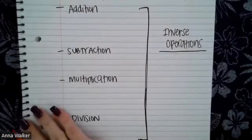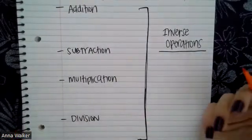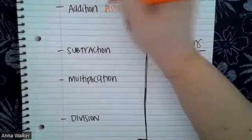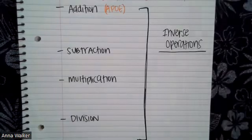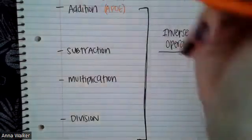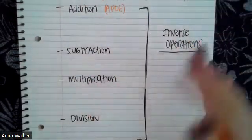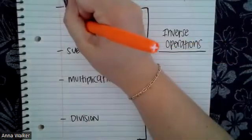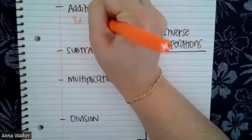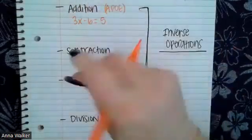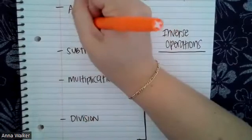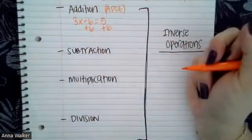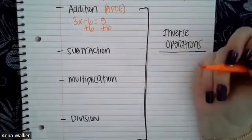Let's get into what the properties of equality are. We have something called the addition property of equality, or APO. The addition property of equality shows that we can add something to both sides of the equation to keep it equivalent. For example, if I have the equation 3x minus 6 equals 5, the addition property of equality states that I could add 6 to both sides of this equation in order to work to solve.